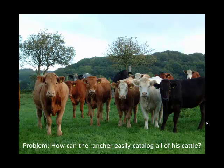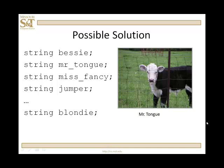So, let's motivate why you would want to use arrays. Here's the problem: How can a rancher easily catalog all of his cattle? He wants to keep an inventory of his cattle, each one of them has a name. Well, one way is simply name them all: string Bessie, string Mr. Tongue, string Mr. Fancy, string Jumper, and so forth and so on. And if you've got 60 animals, then you've got 60 lines of code just to declare the variables.